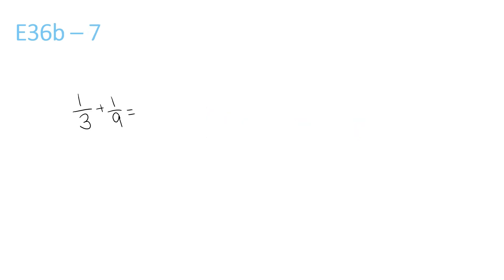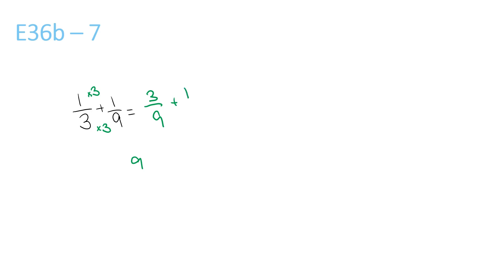Next question. The LCM of 3 and 9 is 9, because that's the lowest number that they both go into. 3 times 3 is 9, so you times the top by 3. 1 times 3 is 3, over 9, plus 1 over 9, equals 4 over 9.